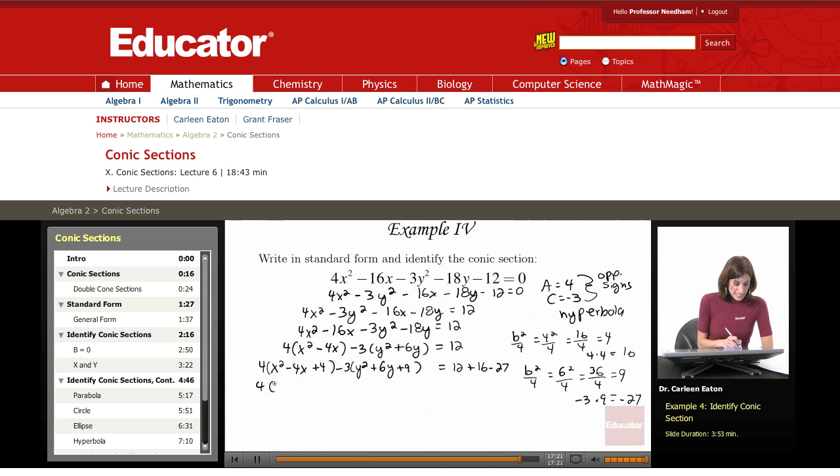Rewriting this as (x - 2)² - 3(y + 3)² equals 16 plus 12 is 28 minus 27. Conveniently, I end up with a 1 on the right.